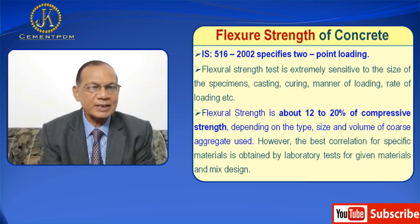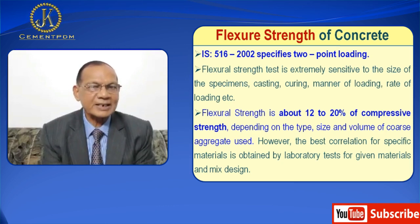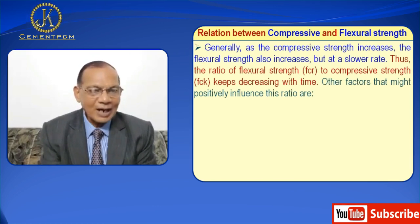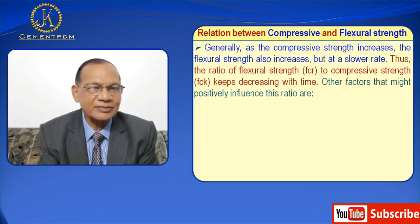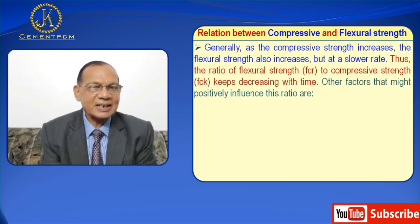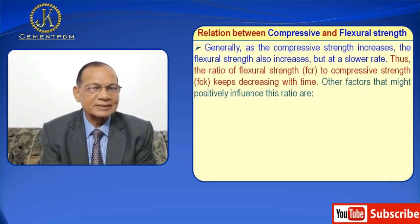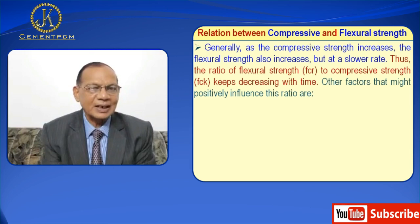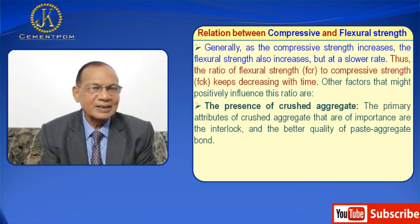Flexural strength is about 12 to 20% of compressive strength, depending on the type, size, and volume of coarse aggregate. However, the best correlation for a specific material is obtained by laboratory tests. Generally, as compressive strength increases, flexural strength also increases but at a slower rate — the ratio of flexural strength (FCR) to compressive strength (FCK) keeps decreasing with increasing strength.